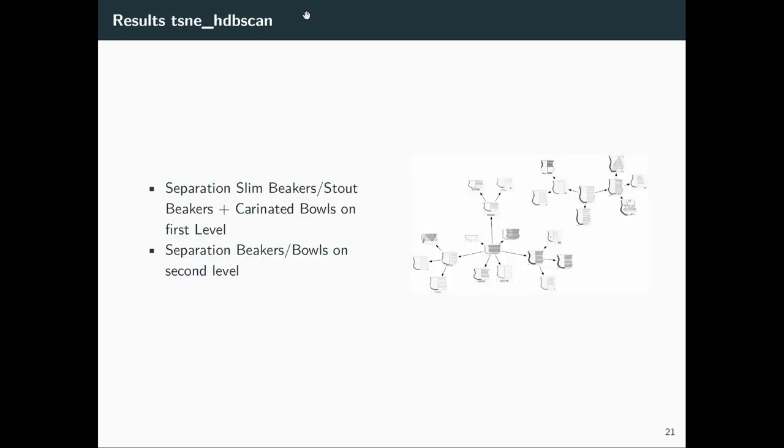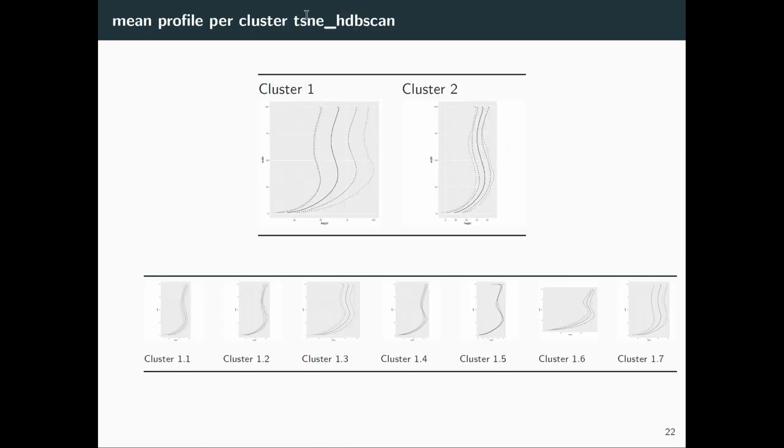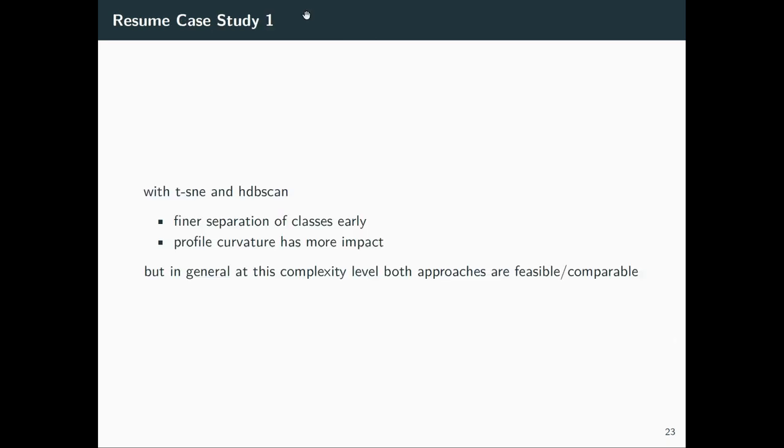With HDBSCAN and T-SNE, we get a bit of different differentiation here. Separation of beakers and the bowls only on the second level. We get a better resulting homogeneity of the individual clusters, but we also get seven clusters so that's probably not a surprise. With T-SNE you get probably a finer separation, but in general on this complexity level both approaches are comparable.